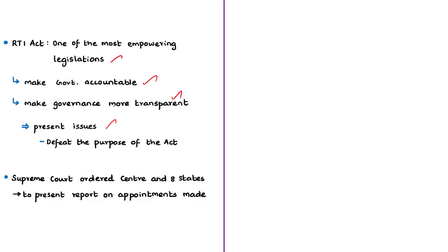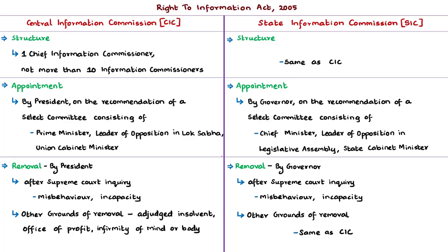According to the news article, the Supreme Court has now ordered the centre and eight states — such as Andhra Pradesh, Maharashtra, Karnataka, Kerala, etc. — to present a report card on the appointments made to the information commissions. We can hope this will bring a solution to the problems. Now let us briefly compare the Central Information Commission and the State Information Commission. The Central Information Commission entertains complaints and appeals pertaining to offices and public sector undertakings under the control of the central government and union territories. The State Information Commission entertains complaints and appeals pertaining to offices and public sector undertakings under the concerned state governments.